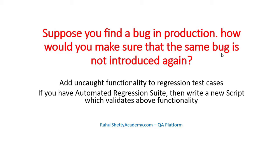If you already have a regression automation suite, you will write a new automation script that validates that bug-related functionality. That way you can catch it again before going to production. That's the straight and simple answer. You should not give lengthy answers — people expect you to just tell in one line what you will do at that moment. Keep your answer straight and simple.